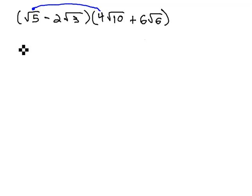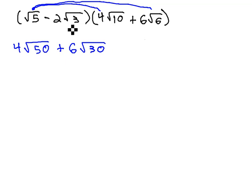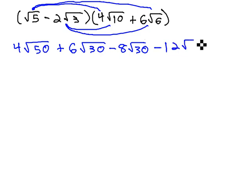Root 5 times 4 root 10, we have the 4 outside the radical, and inside the radical, 5 times 10 is 50. Then take the root 5 times the 6 root 6, 6 outside the radical, and 5 times 6 is 30. Take the negative 2 root 3 times 4 root 10, gives us negative 8 root 30. And negative 2 root 3 times 6 root 6 is negative 12 root 18.